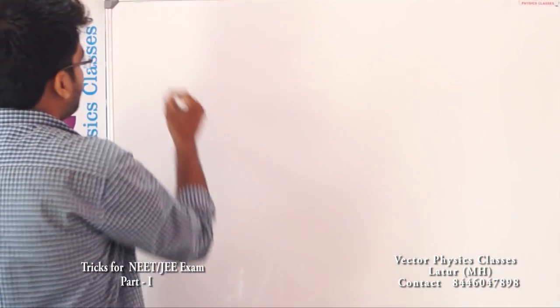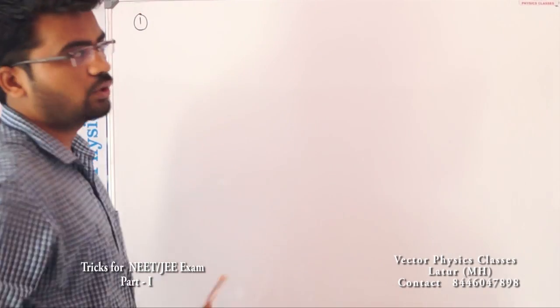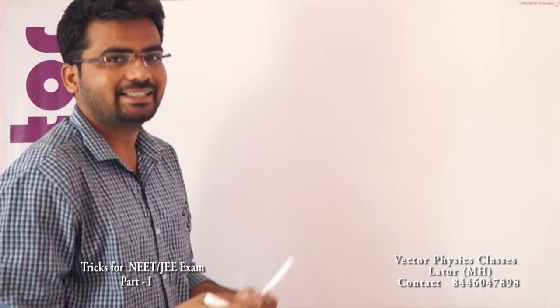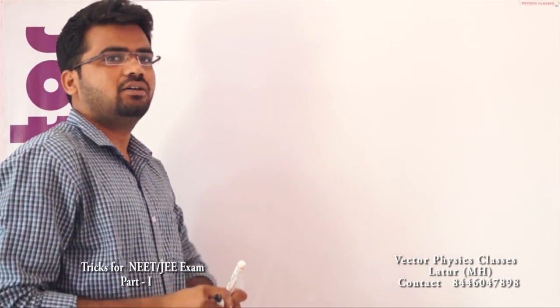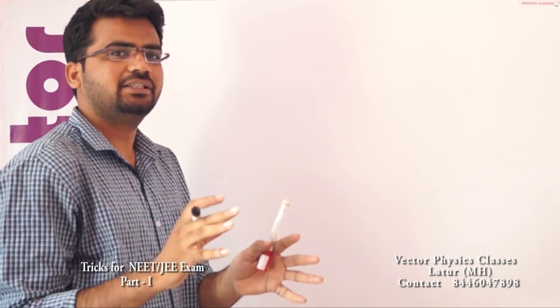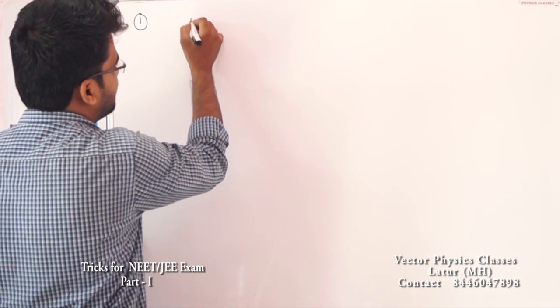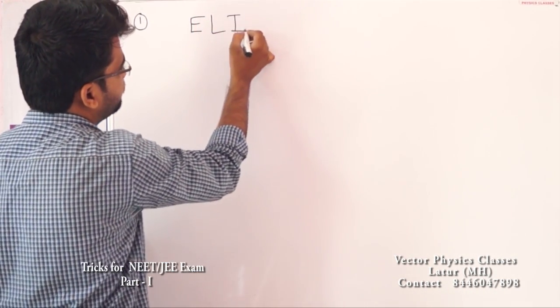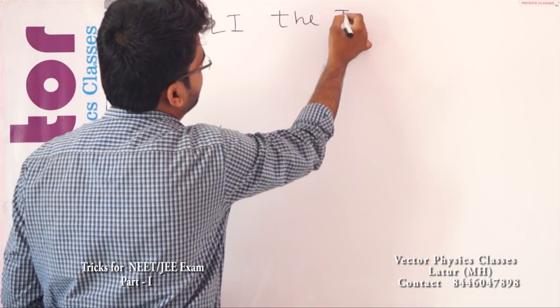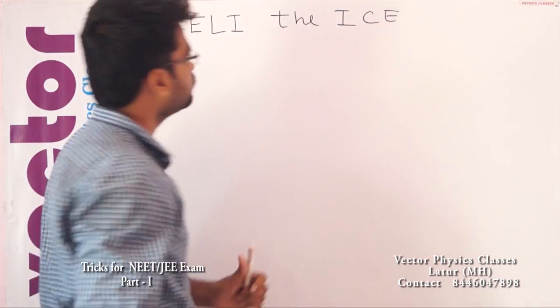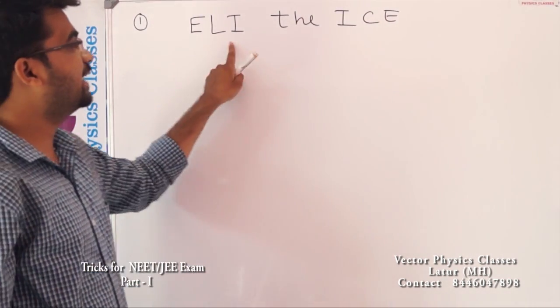The first formula is based on the inductor — what leads, whether current leads or EMF leads. That means inductor and capacitor. Many students face problems with this, so I am giving you a very simple trick. It goes like this: ELI the ICE man.